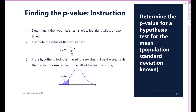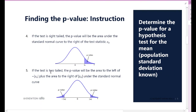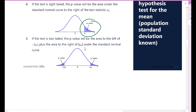For a left-tailed test, the p-value is the area to the left of the test statistic. For a right-tailed test, the p-value is the area to the right. For a two-tailed test, you take both the negative and positive versions of your test statistic, calculate the area to the left of the negative and to the right of the positive, and that combined area is your two-tailed p-value.